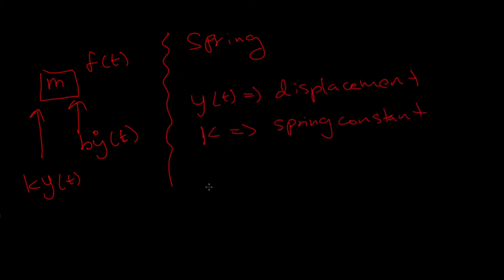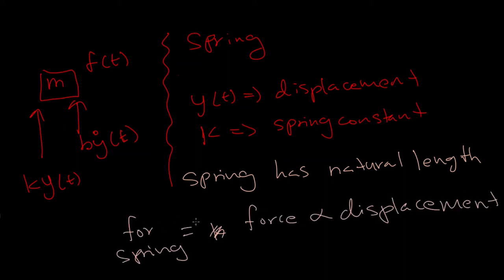As you can see, y is the displacement and k is the spring constant. A spring has a natural length and it will oppose the force applied to it and it is proportional to the displacement. What do I mean by this?